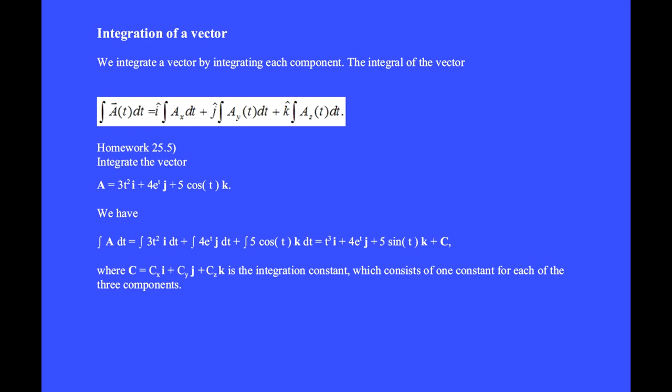We have the integral of vector a dt is equal to t cubed i hat plus 4e to the t j hat plus 5 sine of t k hat plus an integration constant c which is a vector.